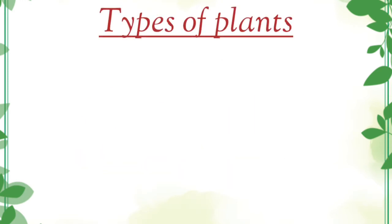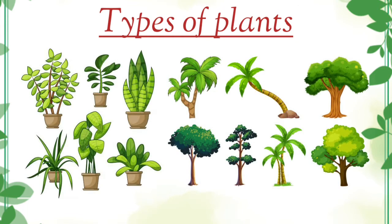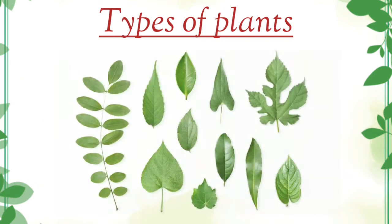Types of plants. We see many different plants around us. They have different shapes and sizes. Some plants are tall and some are short. Different plants have different shapes and sizes of leaves.